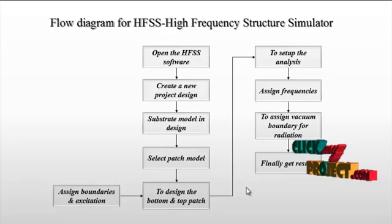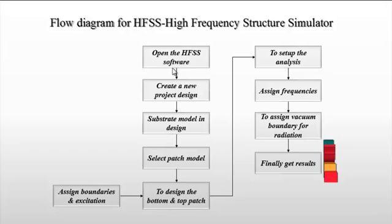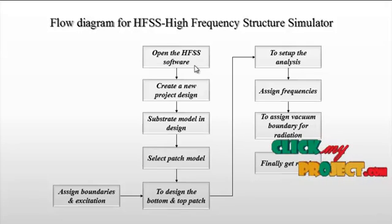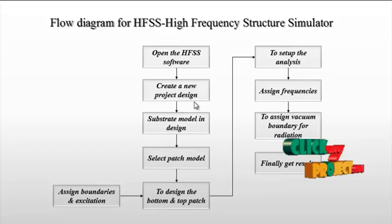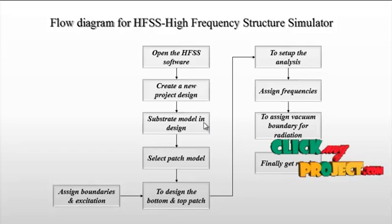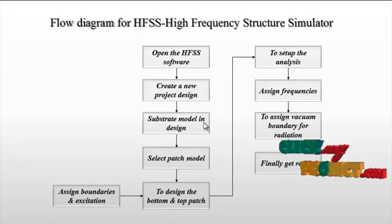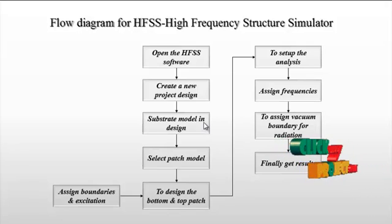Now let us discuss the flow diagram for HFSS — the High Frequency Structure Simulator. The HFSS design operates in 3D with X, Y, and Z axes. First, open the HFSS software and create a new project design. Then model the substrate — here we are using the FR4 substrate with a dielectric constant of 4.4. Then select the patch model such as rectangle, circle, or another shape.